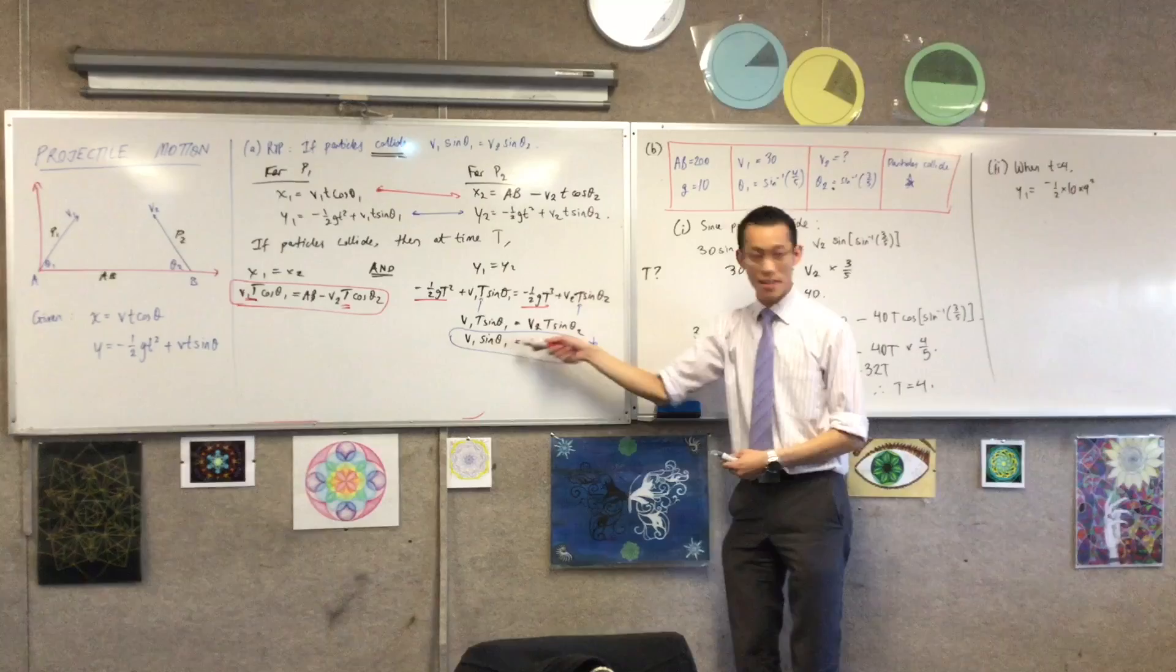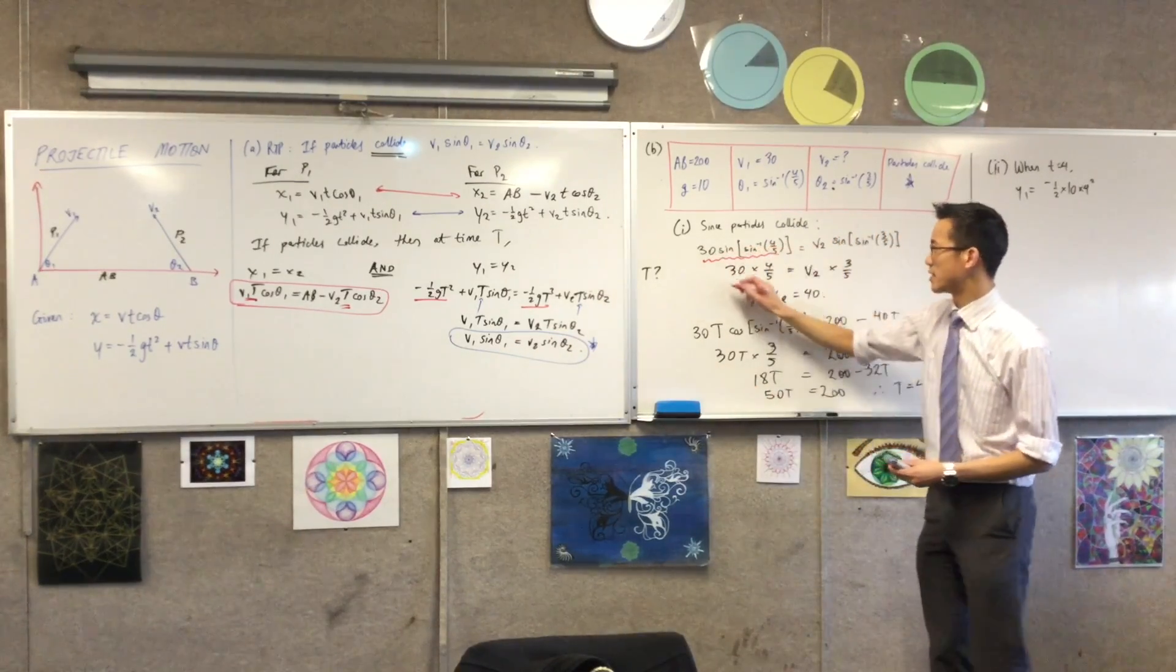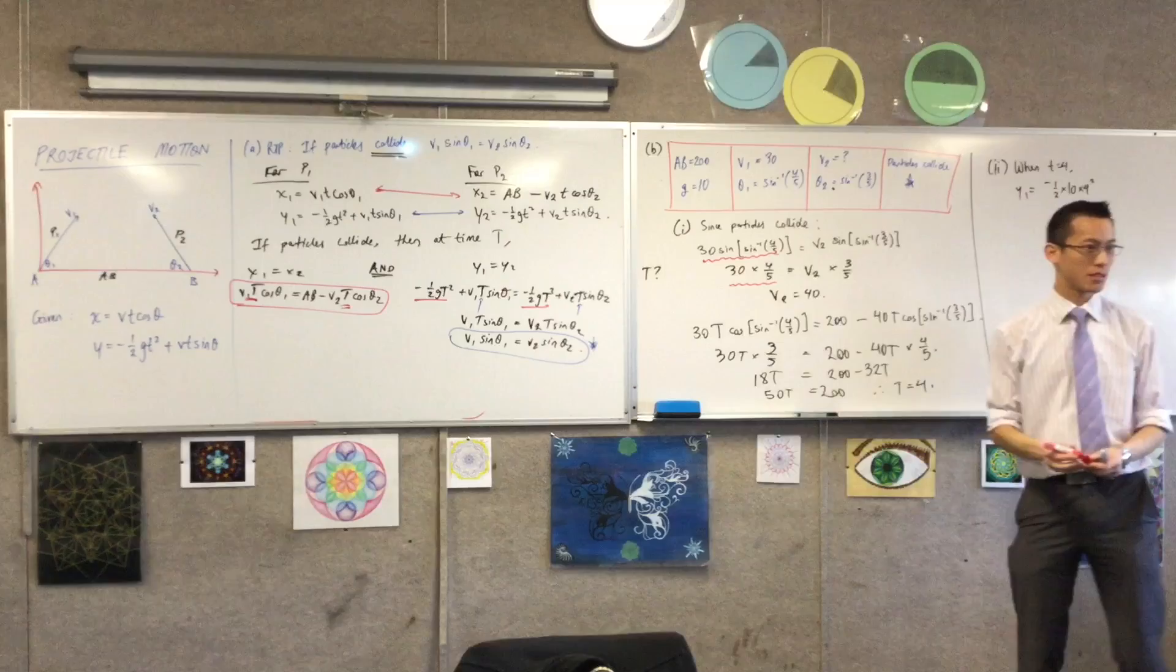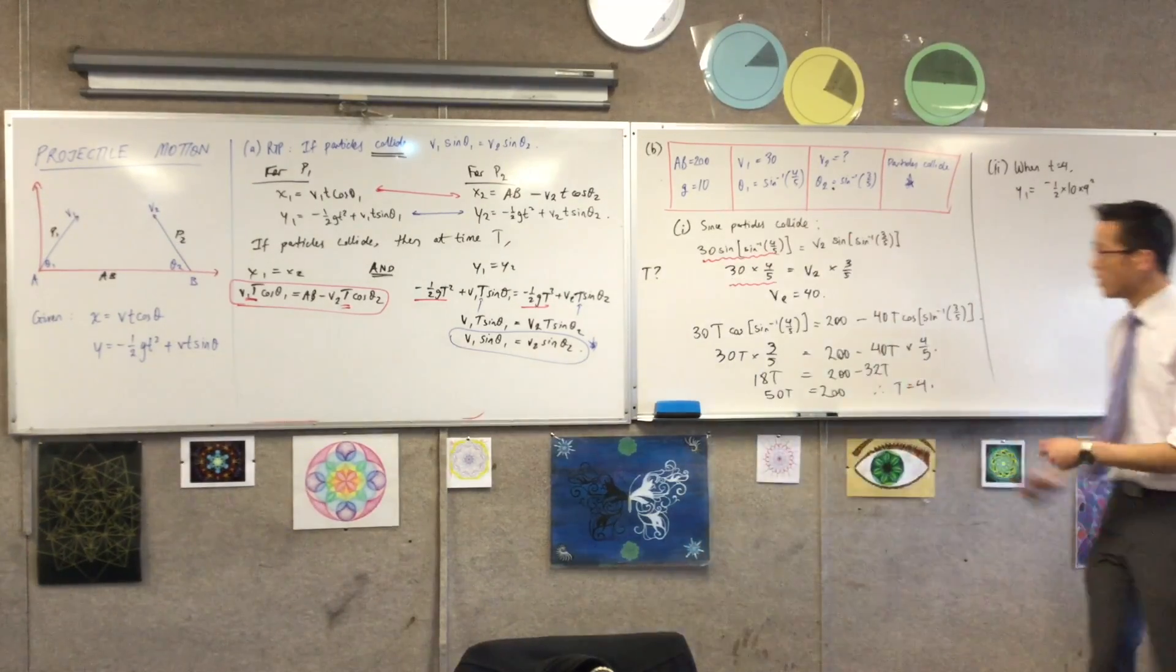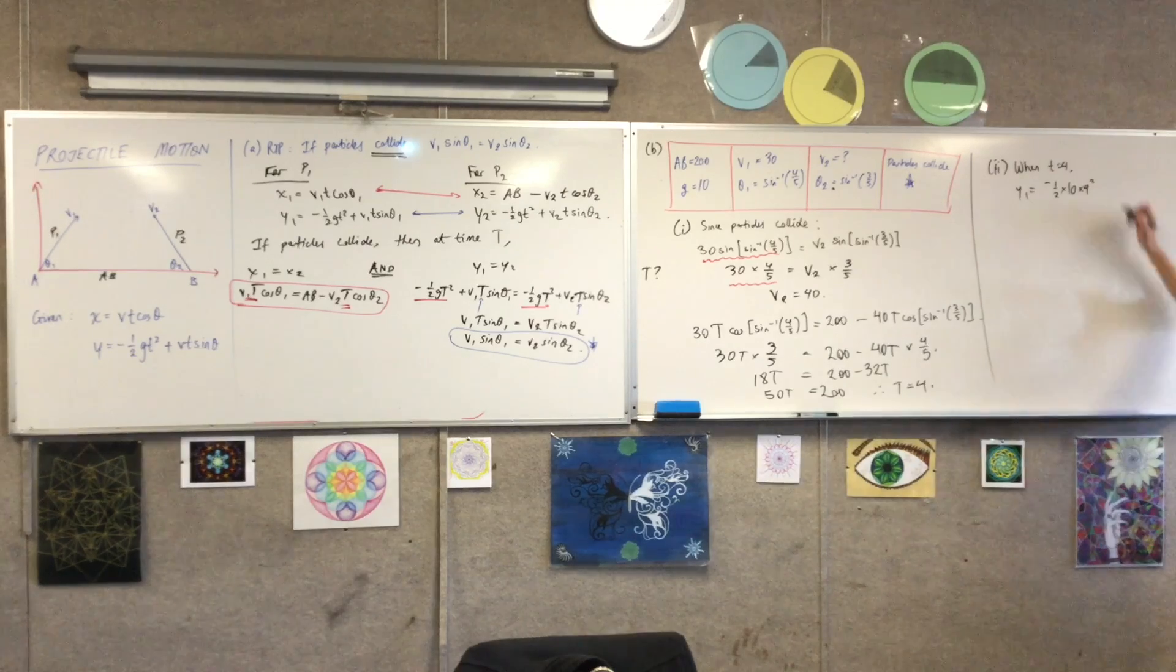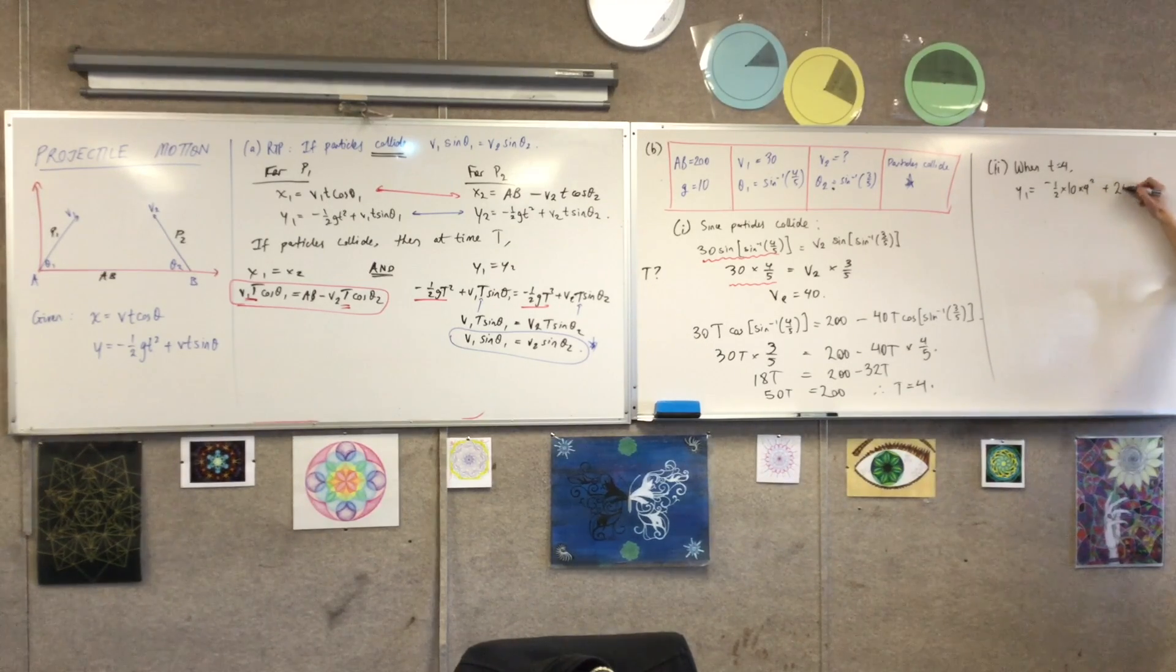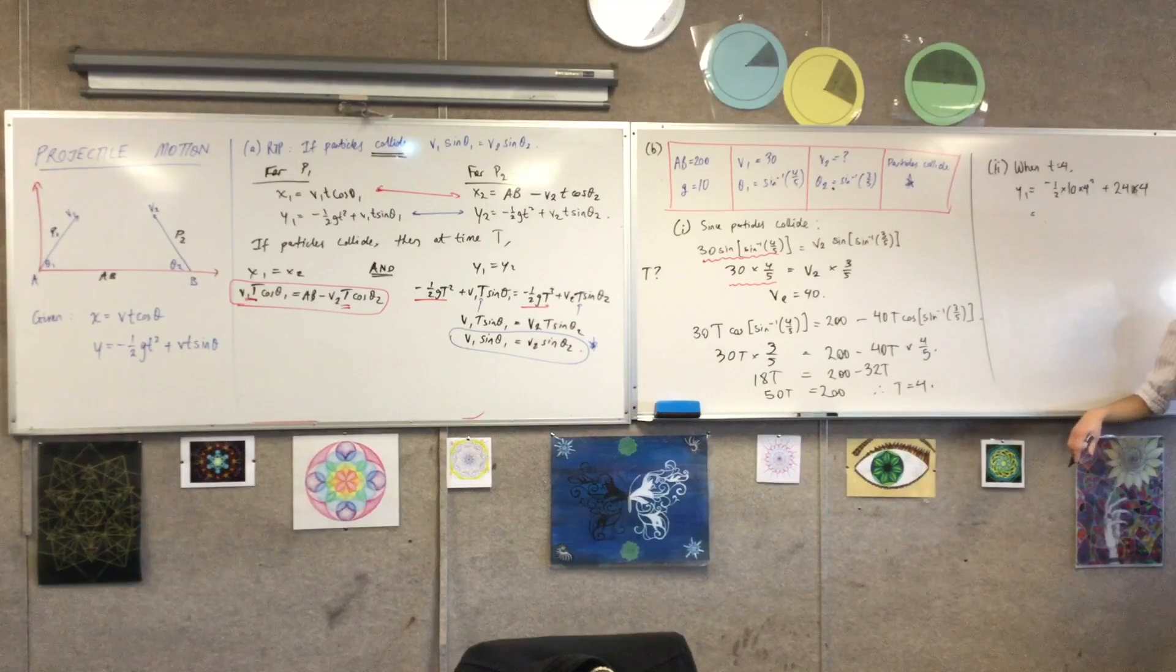So, that right there, which means that right there, is v1 sine theta 1. So, I'm going to pop that in. That's 4 fifths of 30, which is 24, right? So, this is what? Plus 24 times 4, because I actually have the particular time, right? Can you go ahead? Help me out. What have I got here?